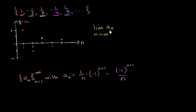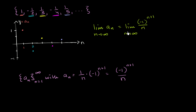Asking what the limit of a sub n is as n approaches infinity is equivalent to asking what the limit of negative 1 to the n plus 1 over n is as n approaches infinity. Remember, a sub n is just a function of n — limited to positive integers as its domain, but still just a limit as something approaches infinity. As n approaches infinity, the numerator oscillates between positive and negative 1, but the denominator just gets bigger and bigger. So we get really, really small numbers, and this thing approaches 0.